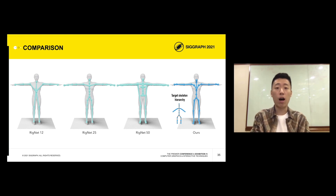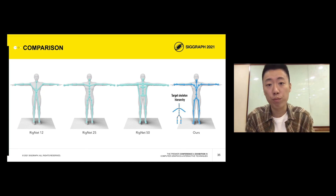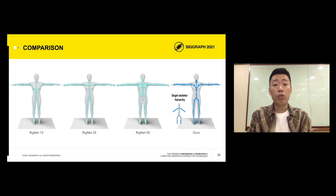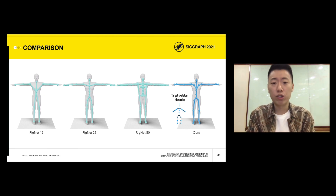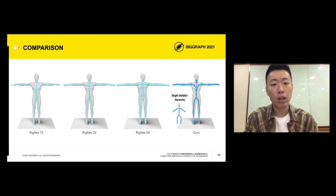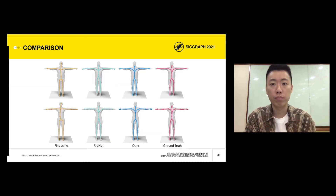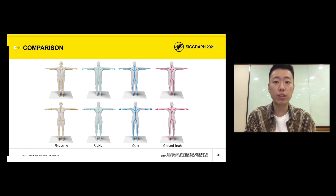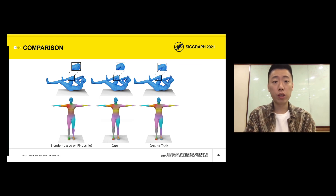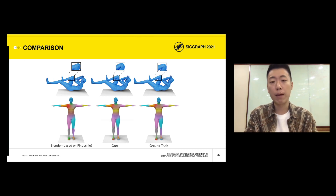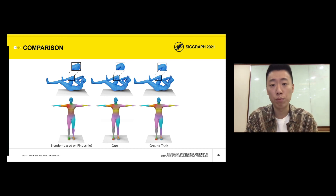As mentioned before, our method can generate skeletons with the desired hierarchy and more accurate joint positioning. With the scalar control of RigNet, we can change the density of the generated skeleton but cannot accurately specify the skeletal structure. The closest RigNet achieves is 25 joints where the target skeleton contains 24 joints. We compare our rigging with existing methods, and our framework generates the desired structure with more accurate joint positions. We also show comparison on deformation and skinning against Blender, which is based on Pinocchio, and our method provides better results on joint regions and more accurate skinning weights.